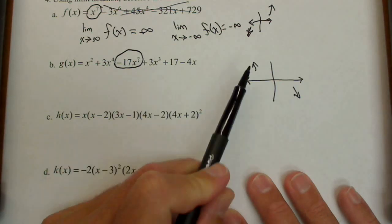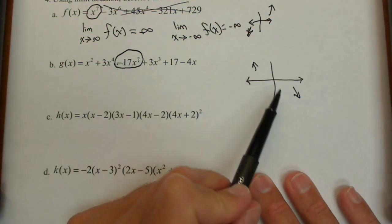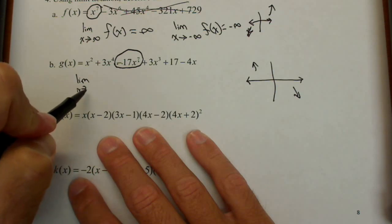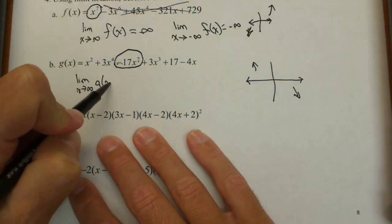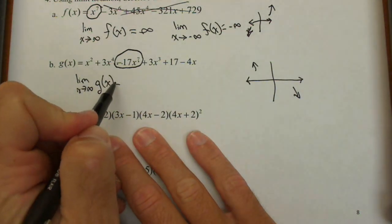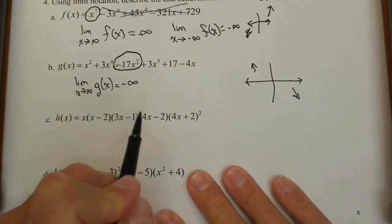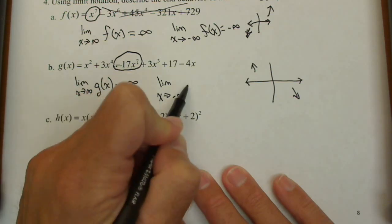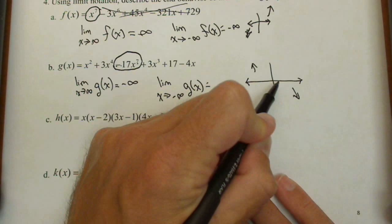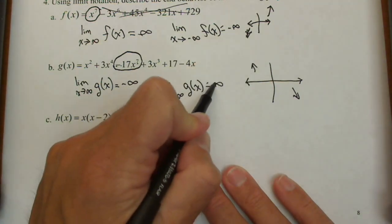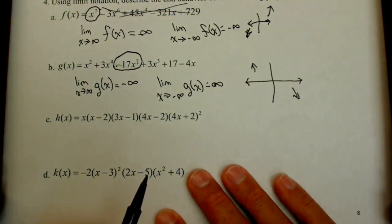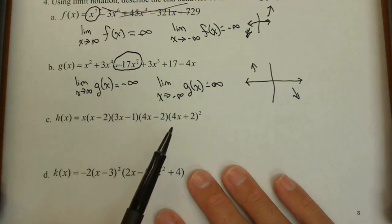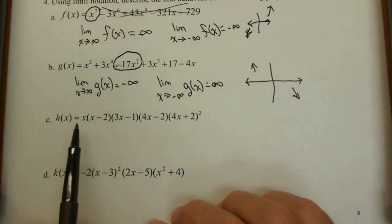It's the exact opposite of what we had before. Odd degree means the ends go in opposite directions; the negative out front makes them go opposite compared to a positive coefficient. Writing this up in limit notation: the limit as x goes to positive infinity of g of x equals negative infinity. And the limit as x goes to negative infinity of g of x equals positive infinity. All polynomials have two ends, so there should be a limit for both, and with polynomials they're always going to go to positive or negative infinity.